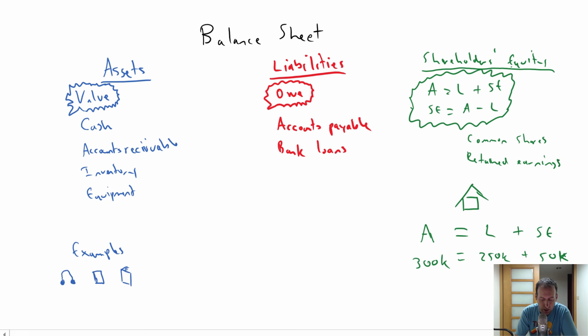Okay, so kind of to summarize here, we got assets, the things we own or control that are good to own or control. Liabilities, that's what we owe. Shareholders' equity, that's the shareholders or the owner's piece of the pie, the owner's piece of the company.